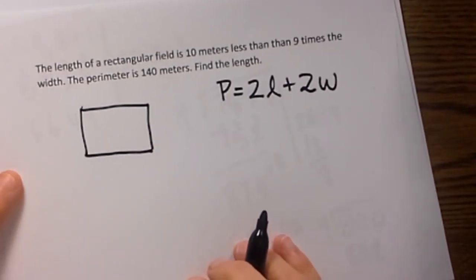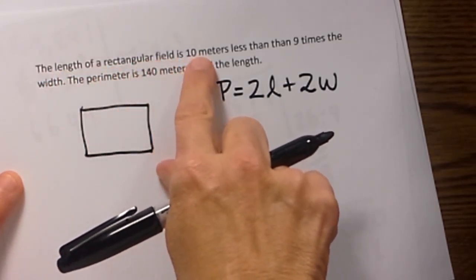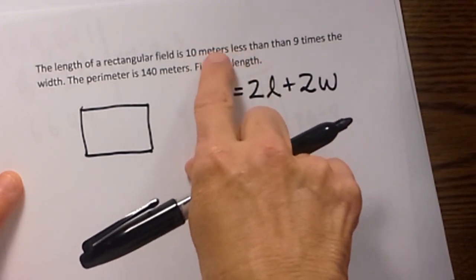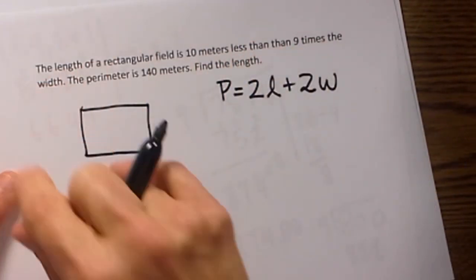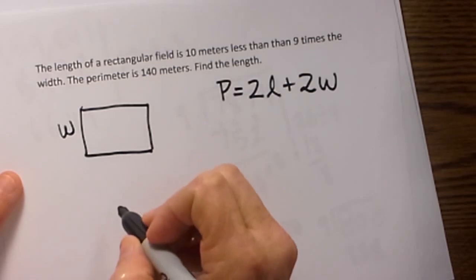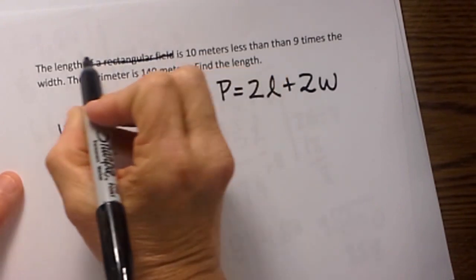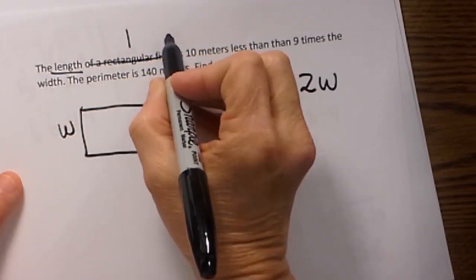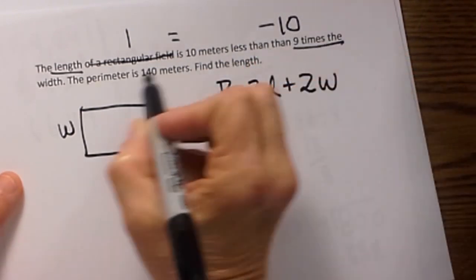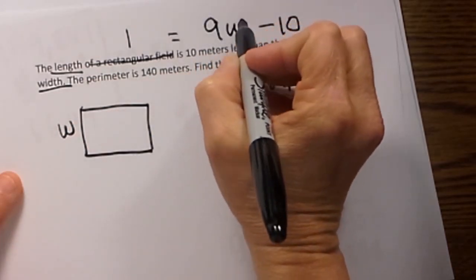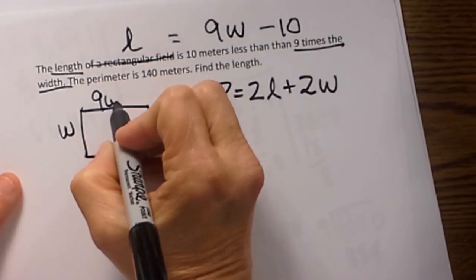Now let's try to label our picture. The length of the rectangular field is 9 meters less, so we are going to subtract 10 from something. From 9 times the width. We don't know the width so let's call it W. Then the length. Notice I am going to cross out some words here. The length is 9W. That represents the length. This length is 9W minus 10.